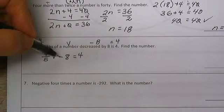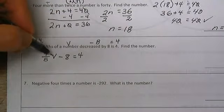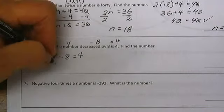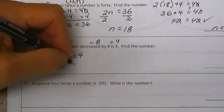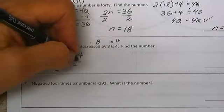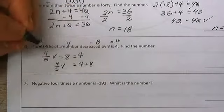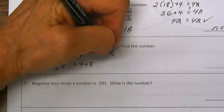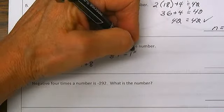We add 8 to both sides. The game is always the same, get the number alone. That gives us four-fifths times V is equal to 4 plus 8, which equals 12.